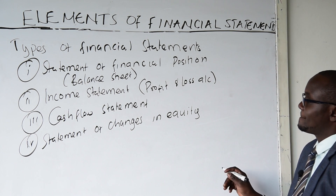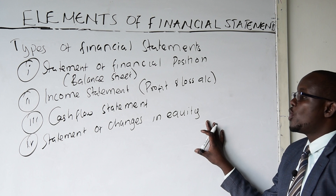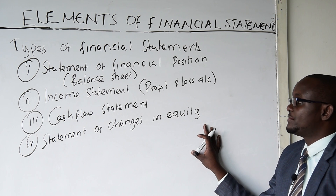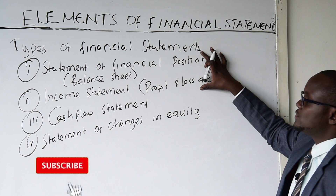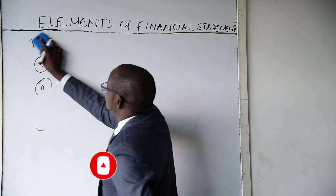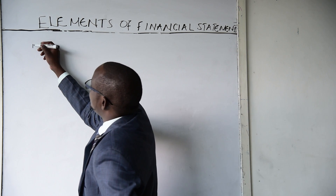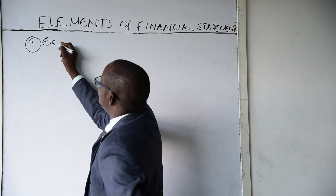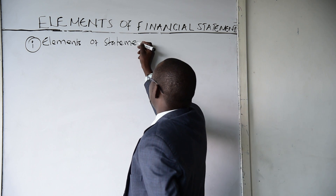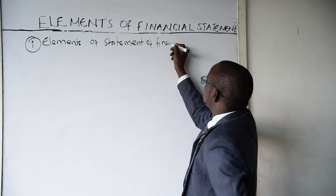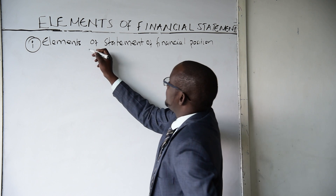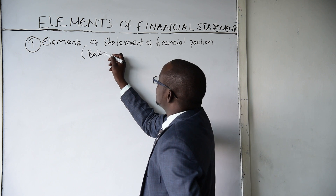The statement of changes in equity — these form the basis of the major financial statements. I want to discuss the elements of the first two financial statements. Let's start with the first one, which is the elements of the statement of financial position, and we have said this is what was previously called the balance sheet.